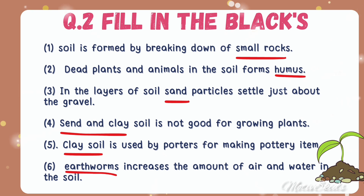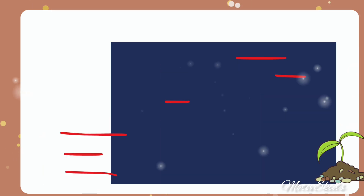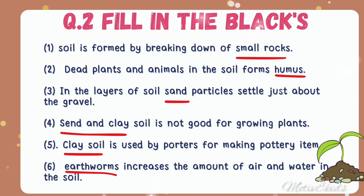Question number two is also fill in the blanks. Soil is formed by breaking down of small rocks. Dead plants and animals in the soil form humus. In the layers of soil, sand particles settle just above the gravel. Sand and clay soil is not good for growing plants. Clay soil is used by potters for making pottery items. Earthworms increase the amount of air and water in the soil.